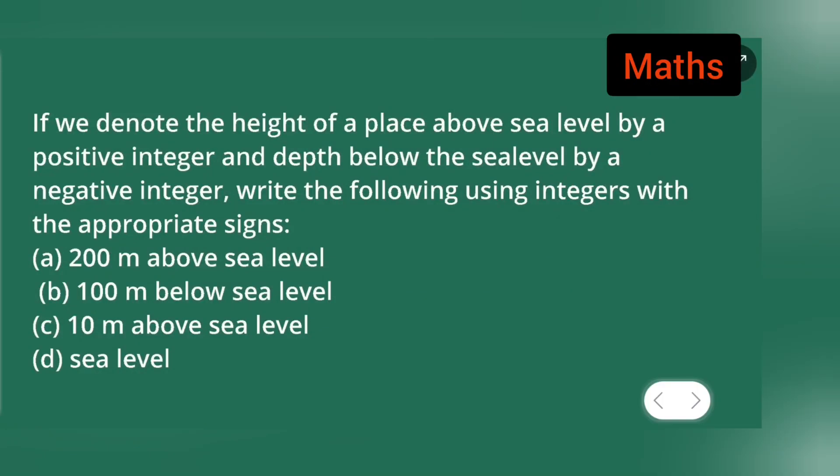In today's mathematics class, the question is: if we denote the height of a place above sea level by a positive integer and below sea level by a negative integer, write the following using integers with appropriate signs. First: 200 meters above sea level. Second: 100 meters below sea level. Third: 10 meters above sea level. Fourth: sea level.